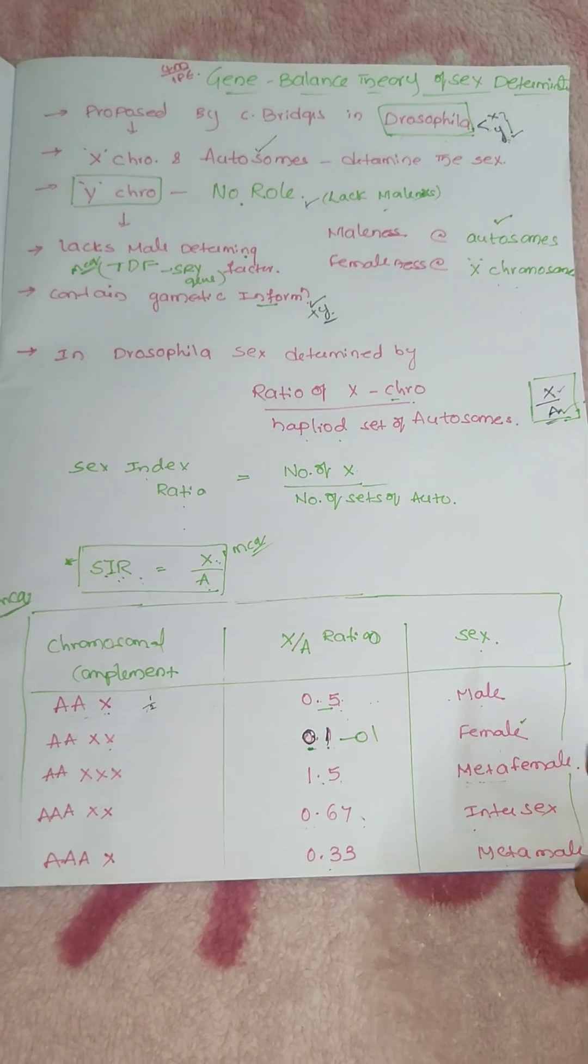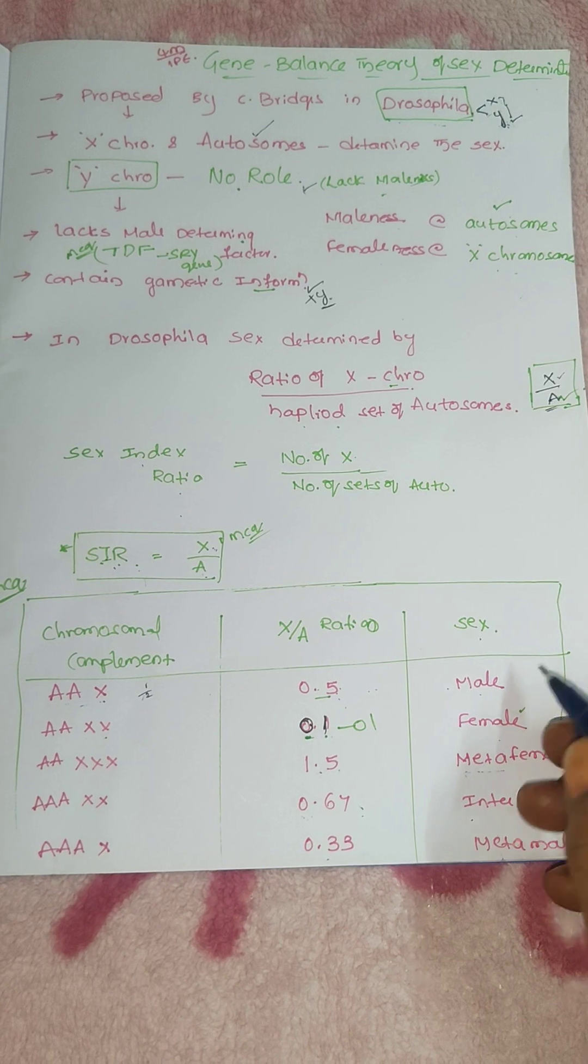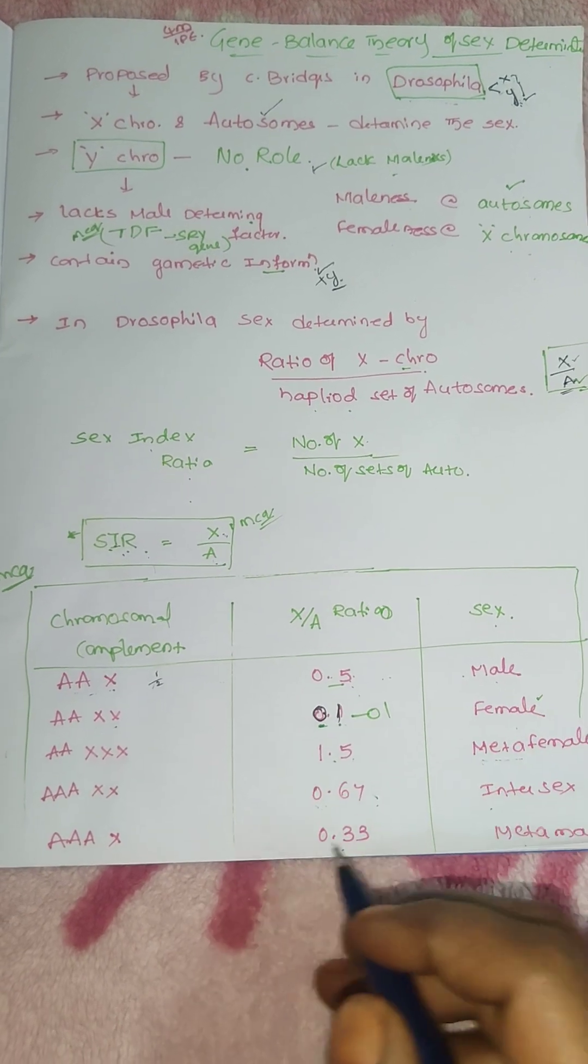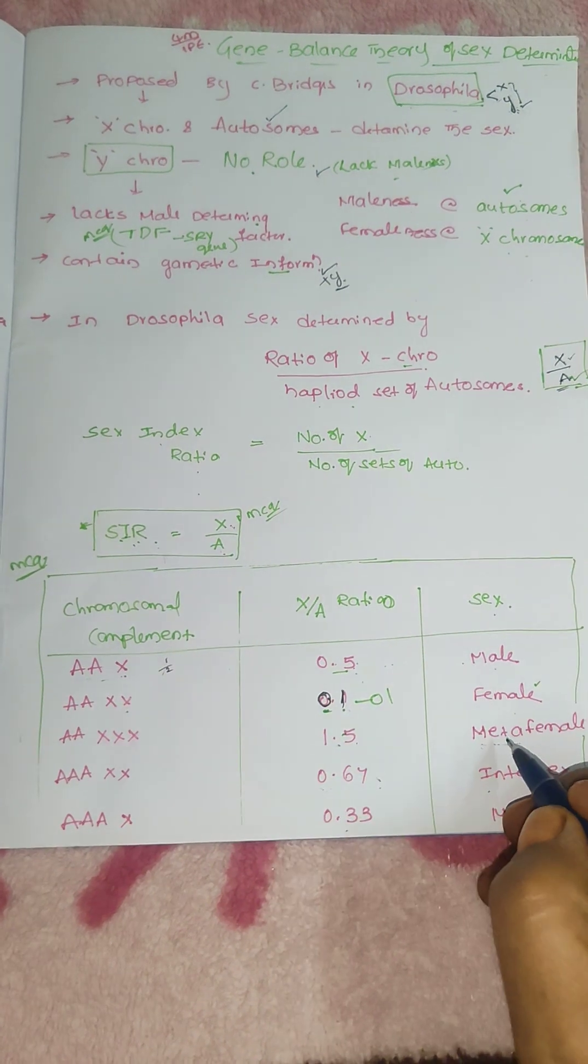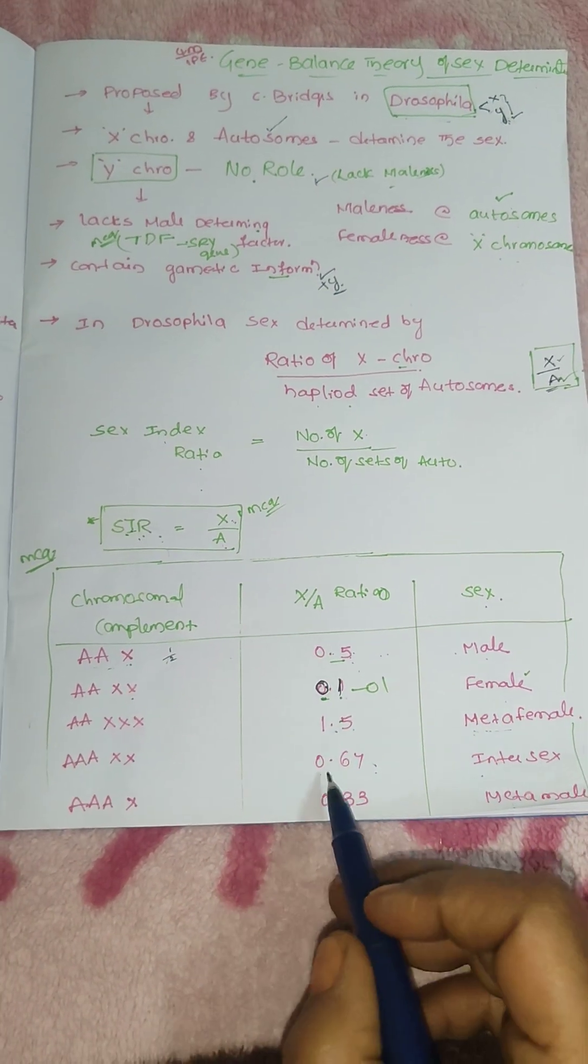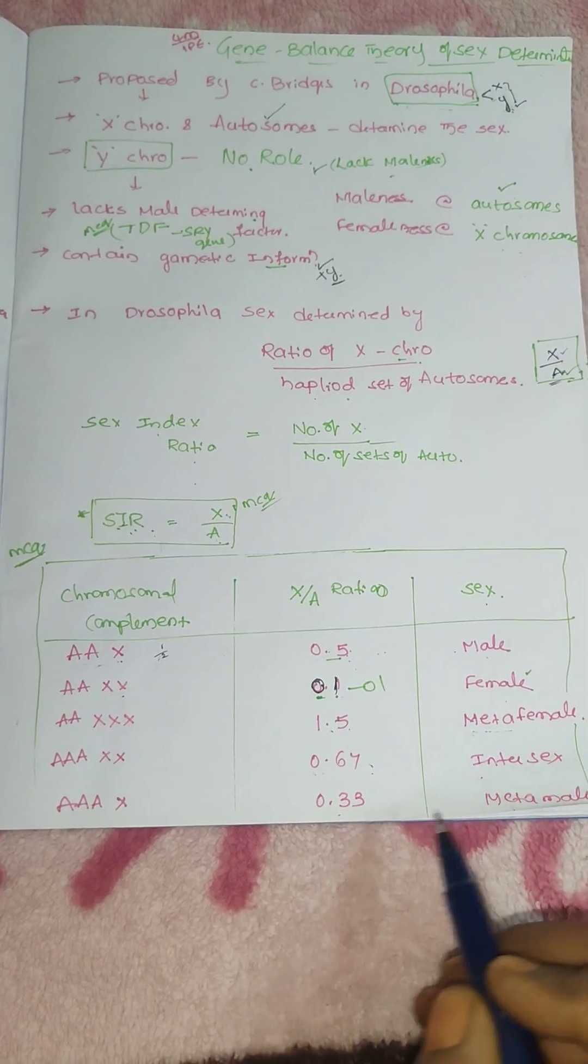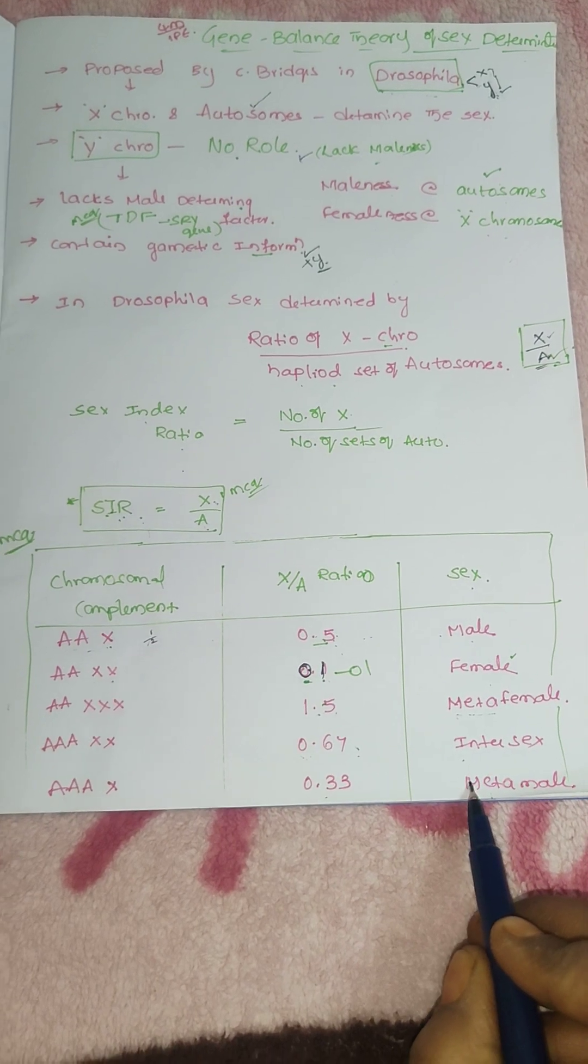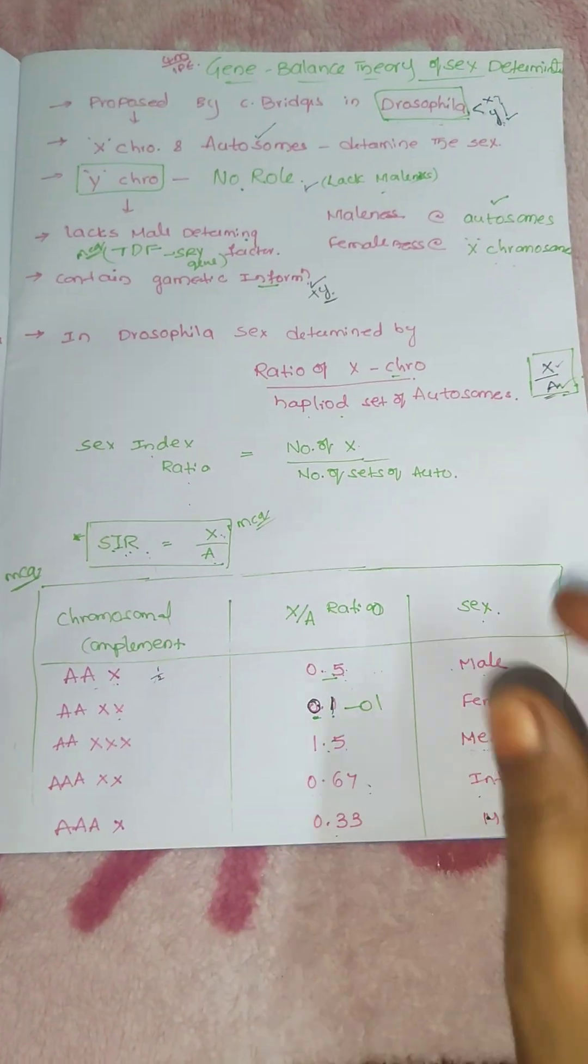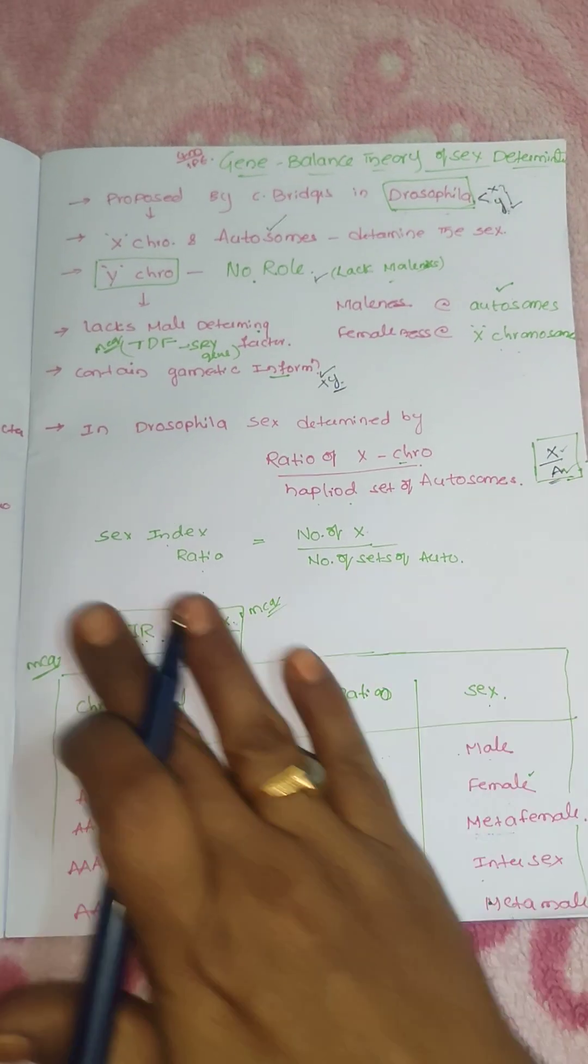Female always number 1. You have to remember like that. Female sex ratio 1, male 0.5. Then 1.5, female extra 0.5 means meta female. And between 1 and 0.5, 0.67 is intersex, 0.33 below 0.5, that is meta male. So in the MCQs they may ask the ratios and they will ask the sex of the offspring.